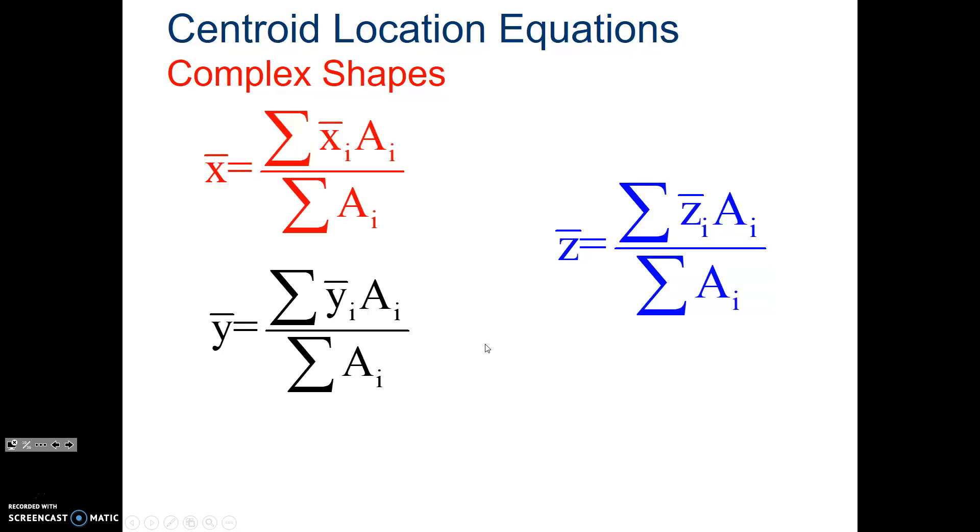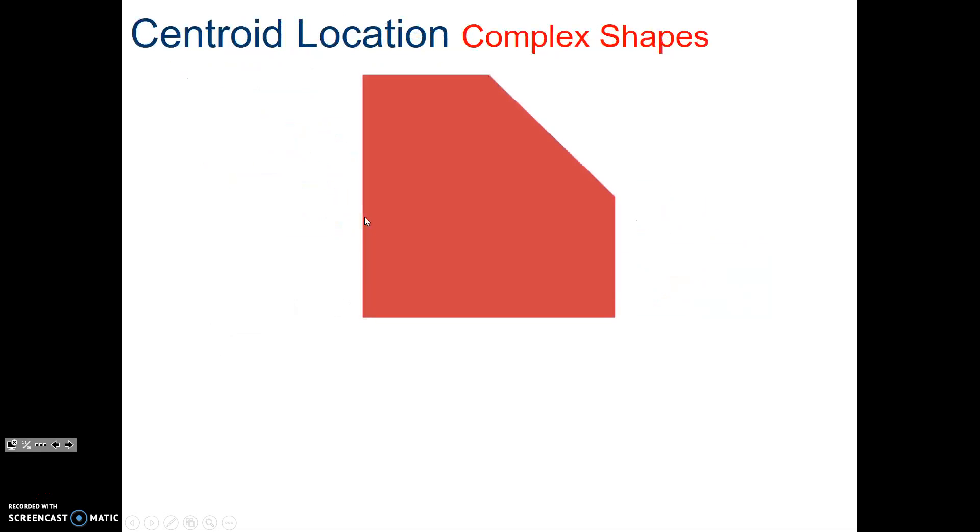Now, to locate the centroids of complex shapes, we have to use these equations. They're not as hard as they look. This sigma means add up, or sum. Sum of the centroids of your individual shapes times the areas of those shapes, all divided by the sum of the area of the shape. What we're going to do is take this shape, which is a complex shape, and divide it up into simpler shapes.